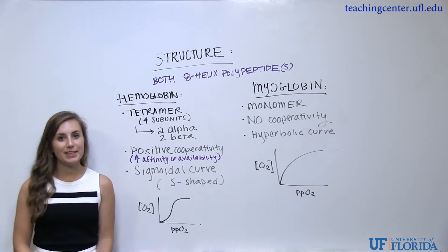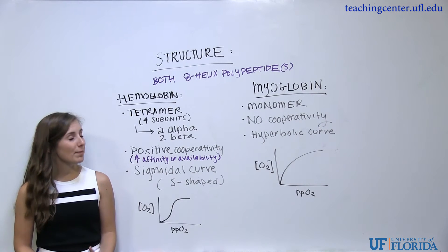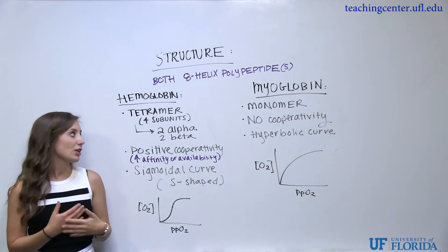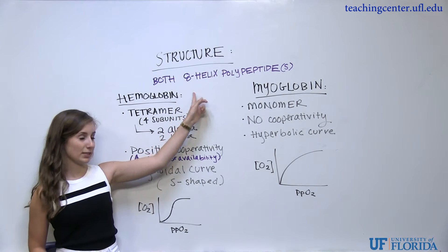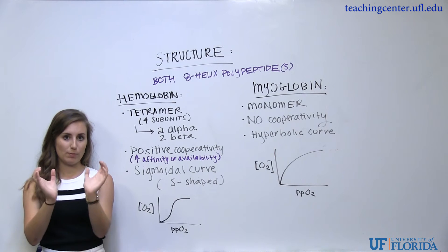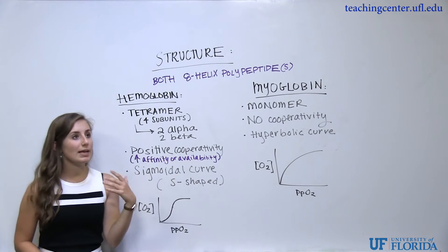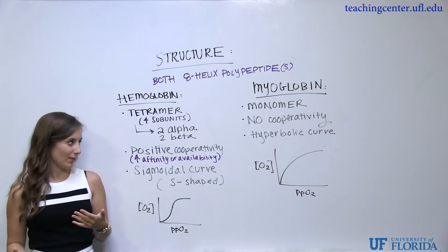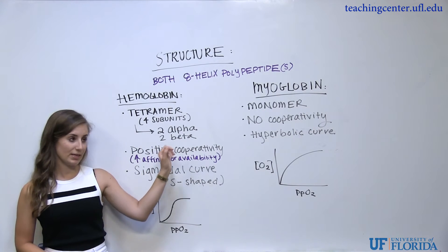Now we will examine the structures of our proteins of interest, hemoglobin and myoglobin. What both structures have in common is this eight-helix polypeptide. Hemoglobin is a tetramer, meaning it has four subunits, and each subunit consists of this eight-helix polypeptide. Myoglobin, however, is a monomer, meaning it only has one eight-helix polypeptide structure.